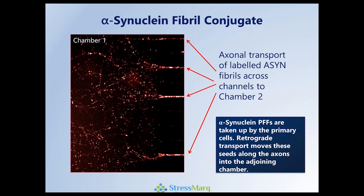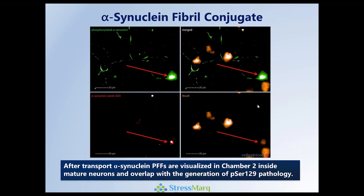This is exactly what we see. Initially we see uptake of the alpha-synuclein fibrils in chamber one and through retrograde transport down the edge channels towards chamber two. Most importantly, we can see that in the cell bodies, in exactly the same place, we can identify the pathology generated using the green signal of the phosphorylated phosphoserine 129 protein. It correlates directly with the seeds that have been transported from the first chamber into the second chamber and into the cell body, showing uptake, retrograde transport, and initiation of pathology at the site where seeds have been delivered.